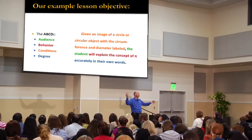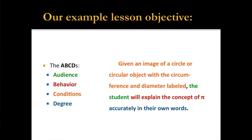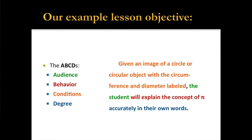Audience — who's going to do it? The student. The behavior I'm looking for: explain the concept of pi. Under what conditions? Given an image of a circle or a circular object with the diameter and the circumference labeled. Degree: accurately, and in their own words. That's that mastery bit — that's how I know they've done it. So the ABCD, that's your lesson objectives. You're not going to include all that detail in your learning goals, but when you get to your lesson plans, you want that there.